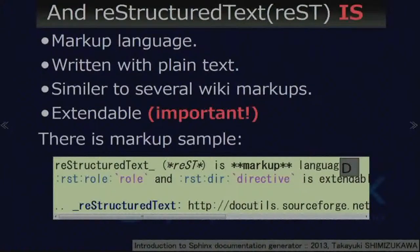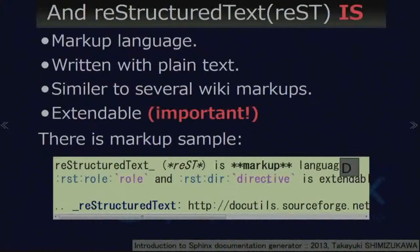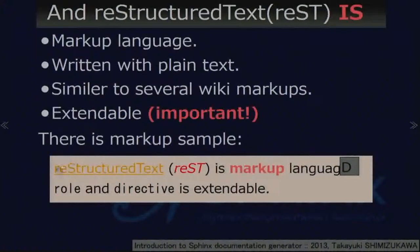And reStructuredText: reStructuredText is a markup language written with plain text. RST is similar to other wiki-like markup but different from others. The RST syntax is extendable too — that's an important point. This is a markup sample that contains links, emphasis, and strong text, and reStructuredText role and directive syntax. This will render with corresponding output.